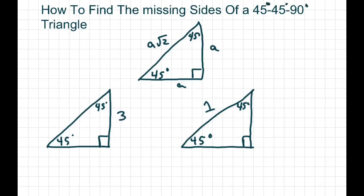Alright, so here's your basic formula. The sides across from the 45 equals A, and the side across from the 90 degree is A square root of 2.